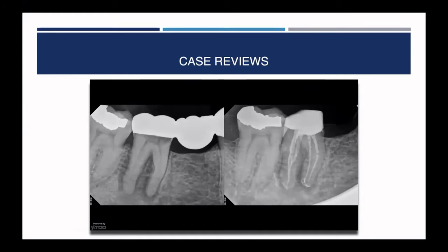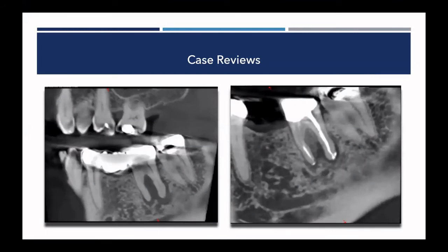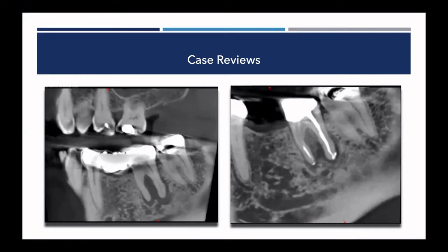Tooth number 30 with extensive decay — removed the bridge, located all the anatomy, very minimally invasive shaping — typically 15 to .2004 now on most of my canals. Then hitting it with the laser and still seeing lots of anatomy. The impressive thing is the healing: three-month follow-up CT shows pretty impressive bone regeneration. Still doesn't have the bridge restored yet. Looking at coronal slices: mesial root on the left, distal root on the right — we see bone regeneration and the buccal bone that's regenerated on the distal root.